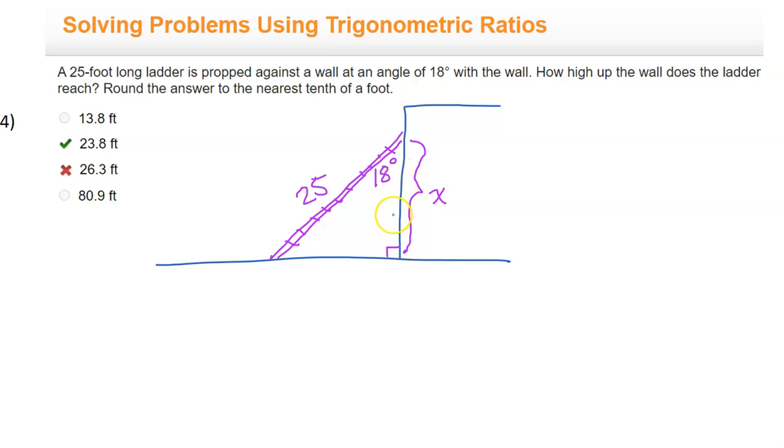We are going to use sine, cosine, or tangent. I like to use the acronym SOHCAHTOA to remind me of the definitions of the three trig functions. Sine is opposite over hypotenuse, cosine is adjacent over hypotenuse, and tangent is opposite over adjacent.